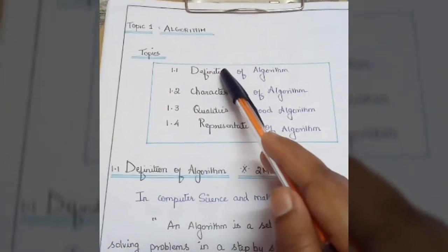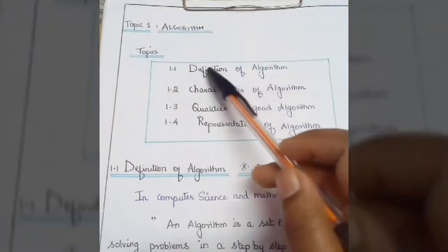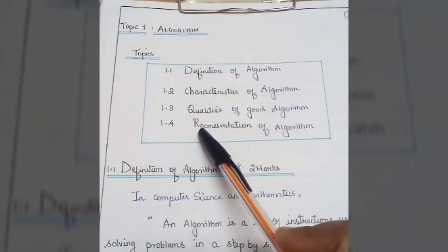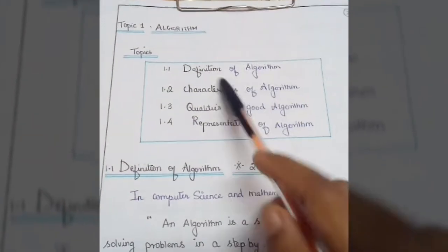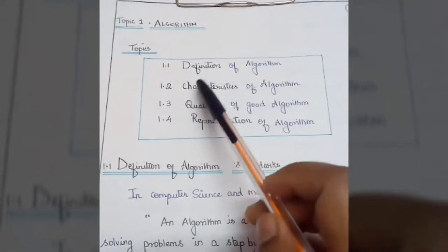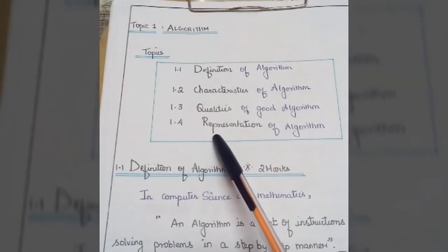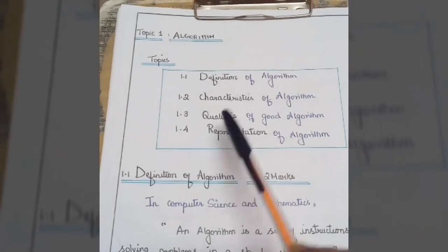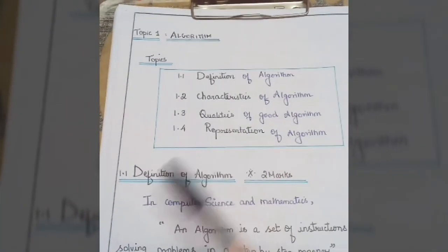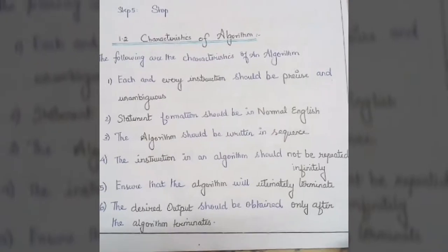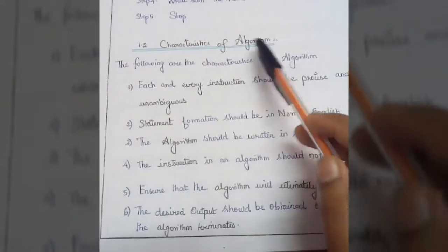For eight marks, it is enough to write only the definition briefly, because you need to explain the other three topics in detail. So for eight marks, write the definition followed by the three subtopics. Now in this video we'll see what those three subtopics are.